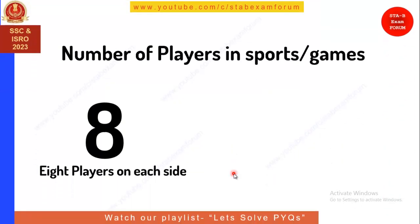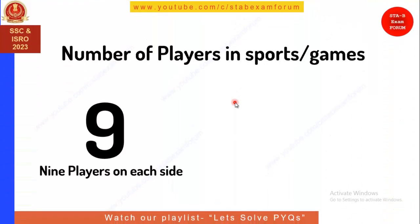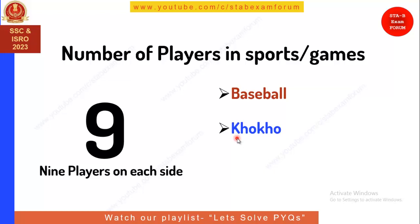Moving to eight players on each side — there is no such game. Coming to nine players on each side: baseball has nine players on each side. Remember: basketball has five players and baseball has nine — these are easy to confuse. Our Indian traditional game Kho-Kho also has nine players on each side. So if asked about Kabaddi, it has seven, and Kho-Kho has nine.